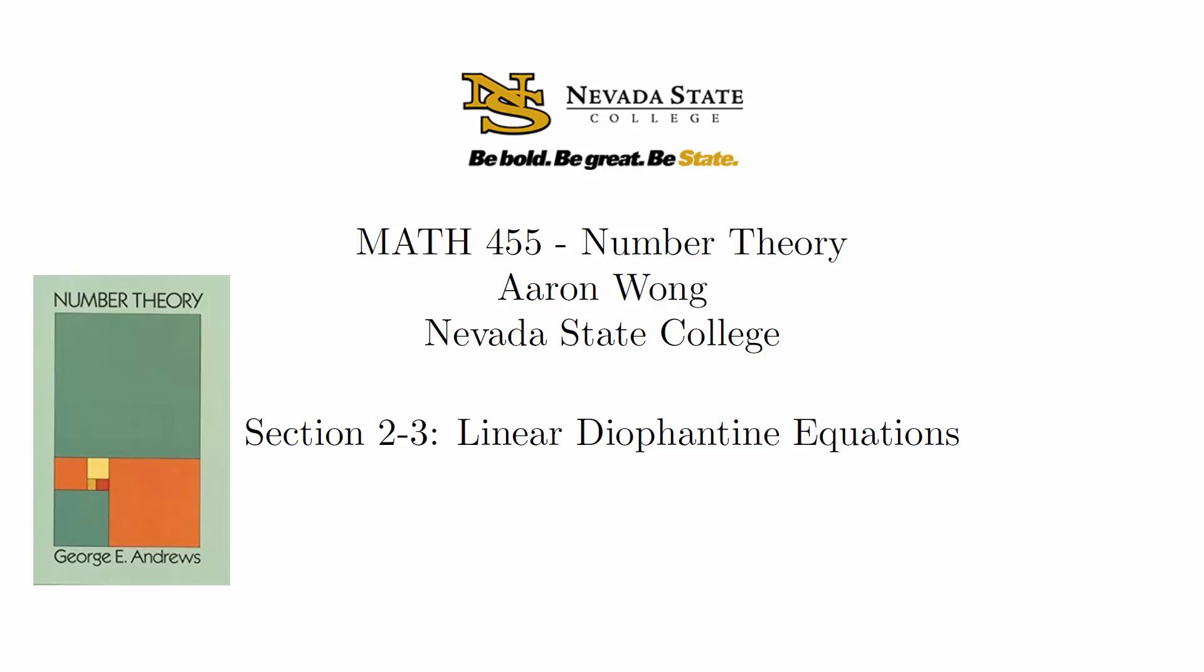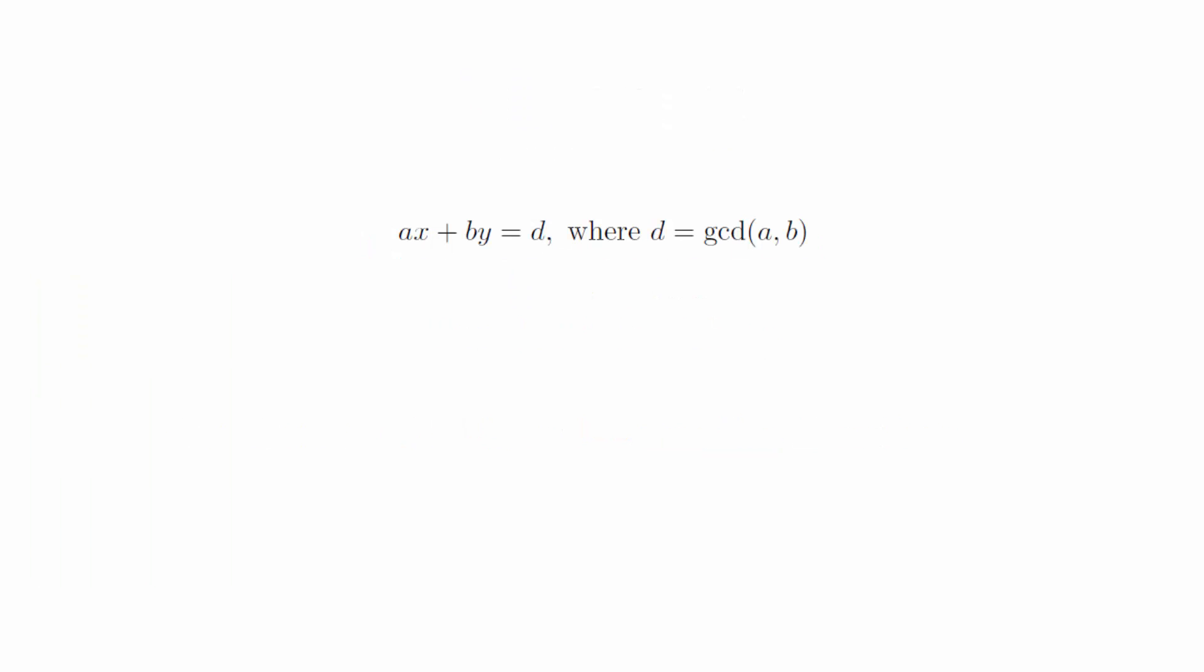At the end of the last video, we mentioned that the Euclidean algorithm applied to the numbers a and b gave us a method for generating an integral linear combination of a and b that is equal to the greatest common divisor. In other words, we have an algorithm that generates solutions to the equation ax plus by equals d, where d is the GCD of a and b.